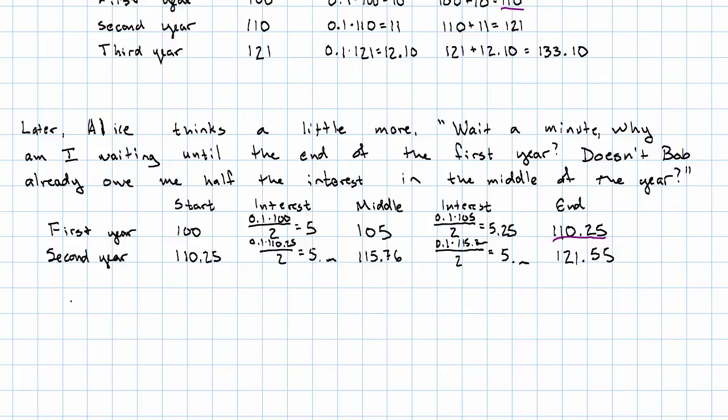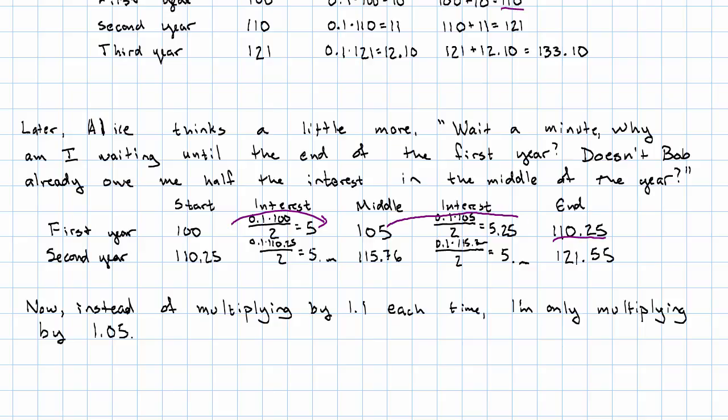What's happening? Now, instead of multiplying by 1.1 each time, I'm only multiplying by 1.05. But I'm multiplying twice as often.